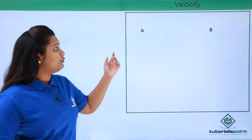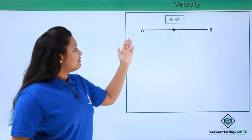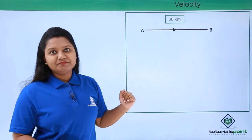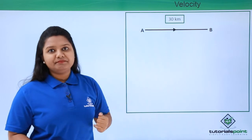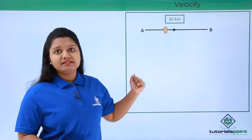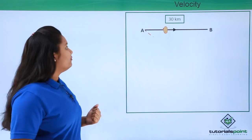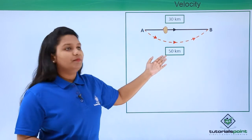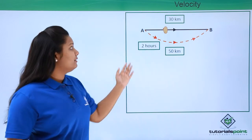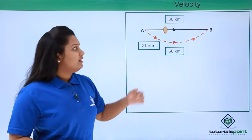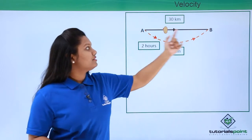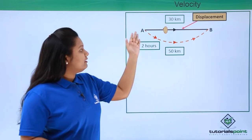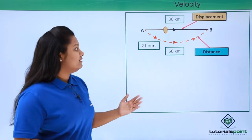Now let's say we have two points A and B connected by a straight path 30 kilometers in length. I want to move from point A to point B, but there was a problem with this road, so I had to take an alternative road 50 kilometers in length, and it took around two hours to travel from A to B. The length of the straight path connecting A and B is called the displacement, and the length of the alternative path taken is called the distance.